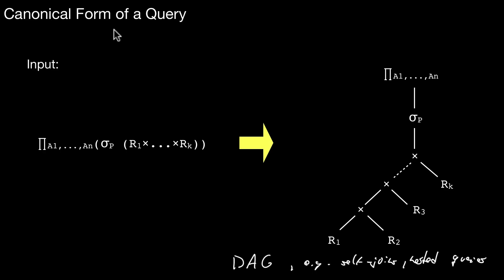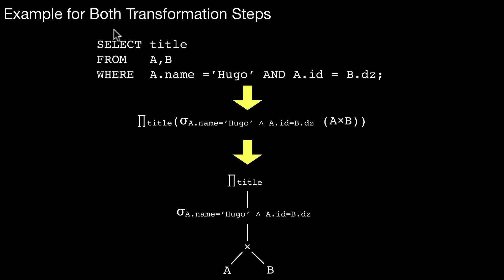That's a canonical form of a query. Here's a more concrete example. Here we have a SELECT title FROM A, B, WHERE A.name equals Hugo AND A.id equals B.dz. We translate that into this algebraic expression and then we end up with something like that, translated here into the canonical form. We end up with a tree like that. Here we have a cross product, then come all the filters and then there's a projection. Just logically.